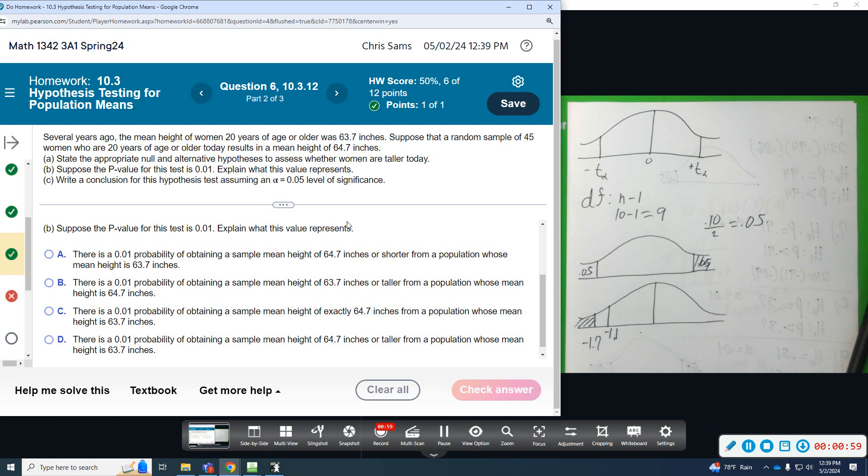If the p-value for this test is 0.01, what does this value represent? The definition of a p-value is the probability that we would get a sample mean of this value or more extreme is 0.01. That's the chance that that happens if the population mean is truly 63.7.